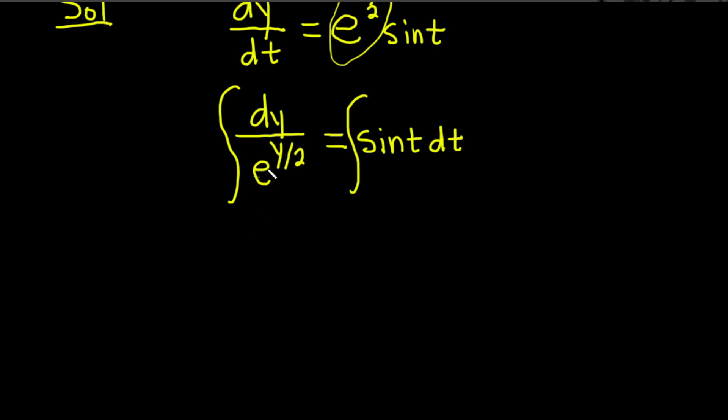When we do that the exponent here is going to become negative. So this is now e to the negative y over 2 dy and this is equal to the integral of sine t dt.